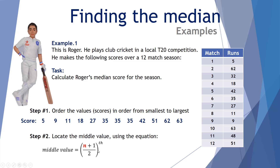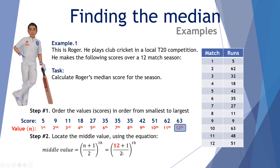We use the equation (n + 1) / 2 for the score or value. The first score is 5, the second is 9, and we go all the way up to the 12th score. The highest score is 63, so there are 12 different scores. To find the middle value: (12 + 1) / 2 = 13 / 2, which gives us a value of 6.5.